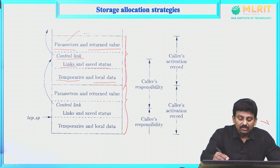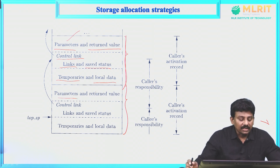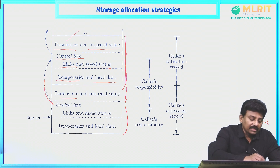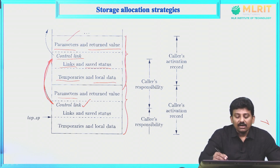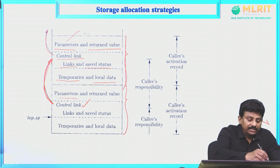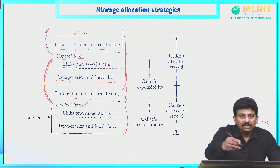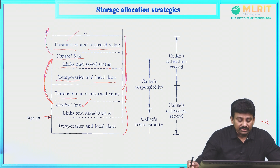The caller's activation record contains parameters, return value, control link, access link, saved machine status, temporaries, and local data. Similarly, the callee's activation record contains the same fields. The control link of the callee's activation record points to the caller's activation record, and the caller's activation record points to the activation record of its own caller. The top stack pointer points to the next activation record.